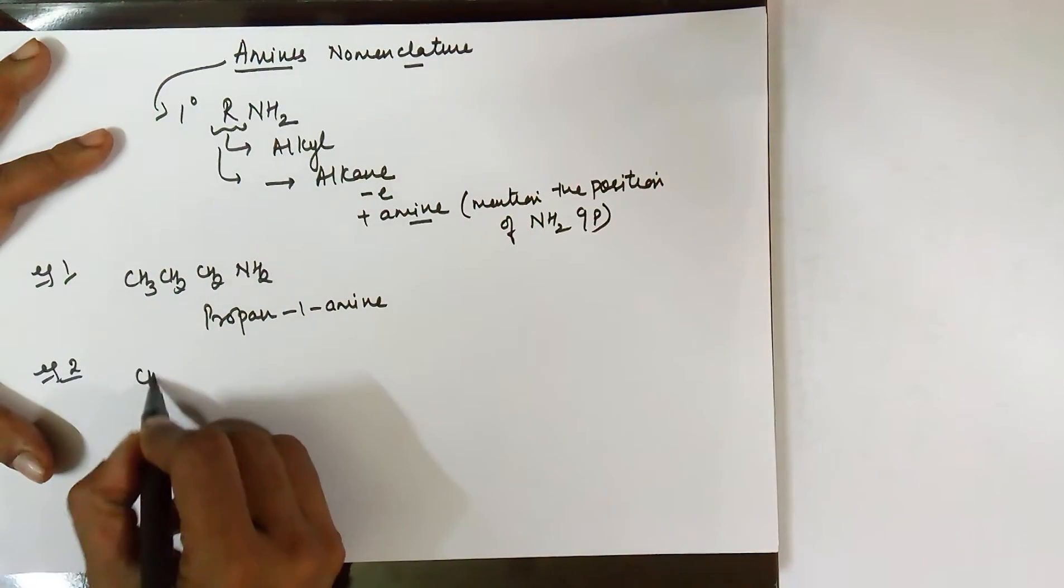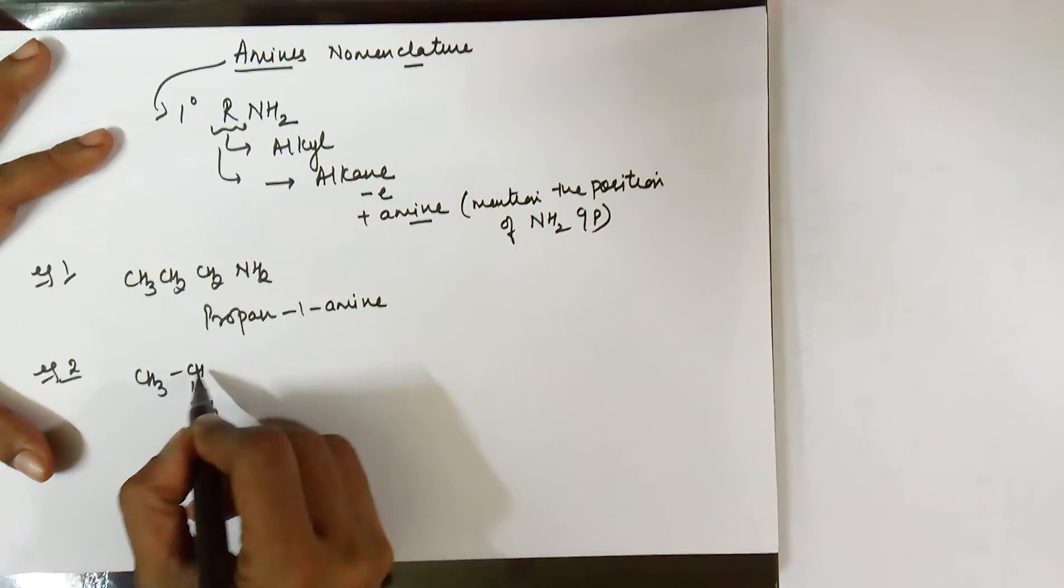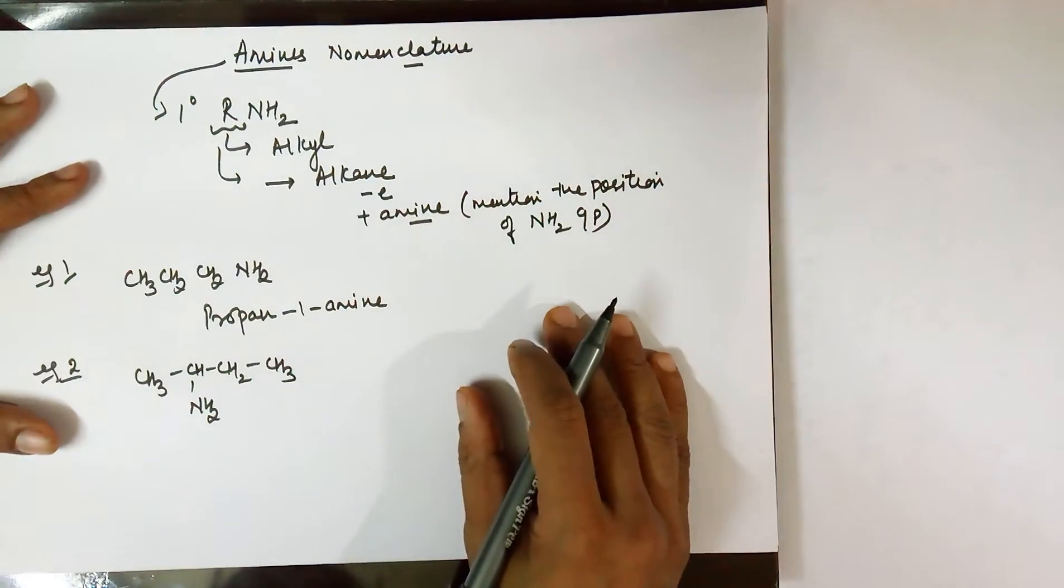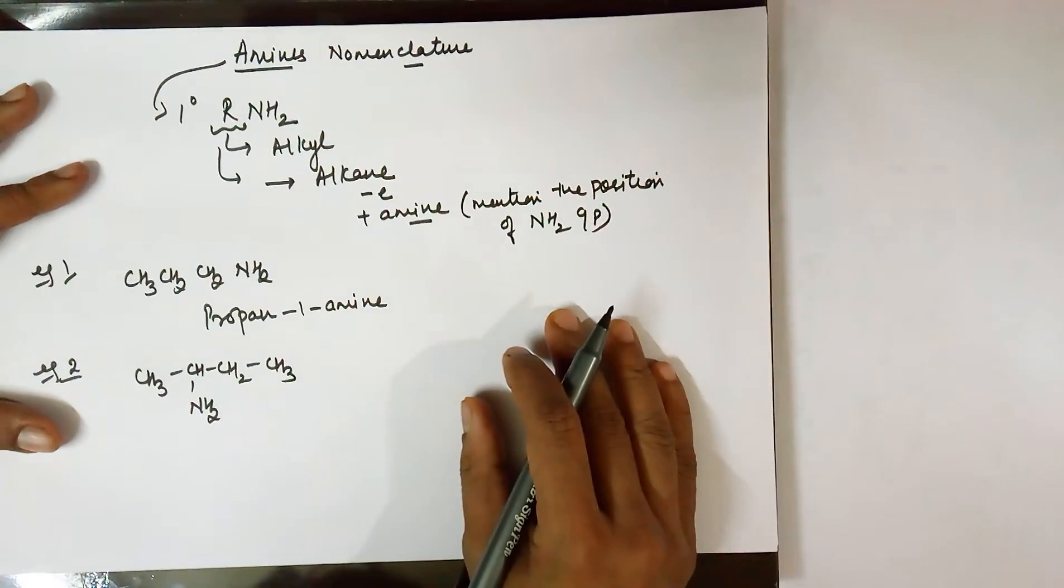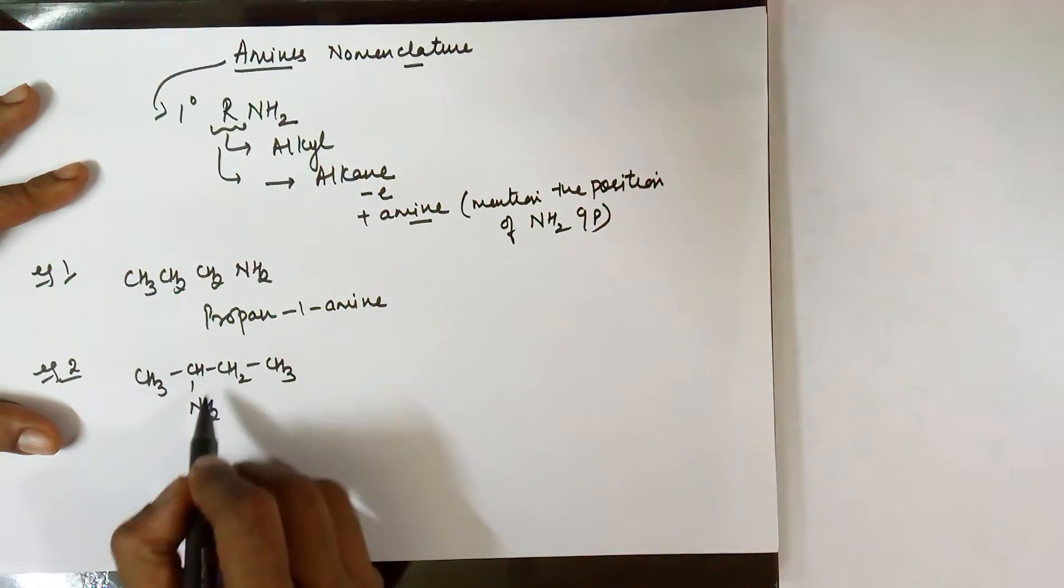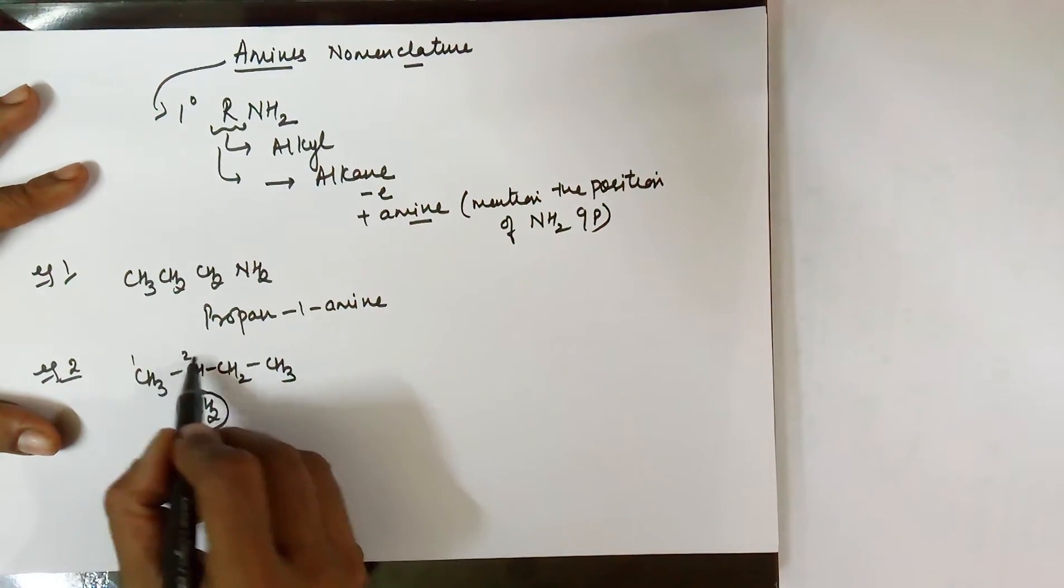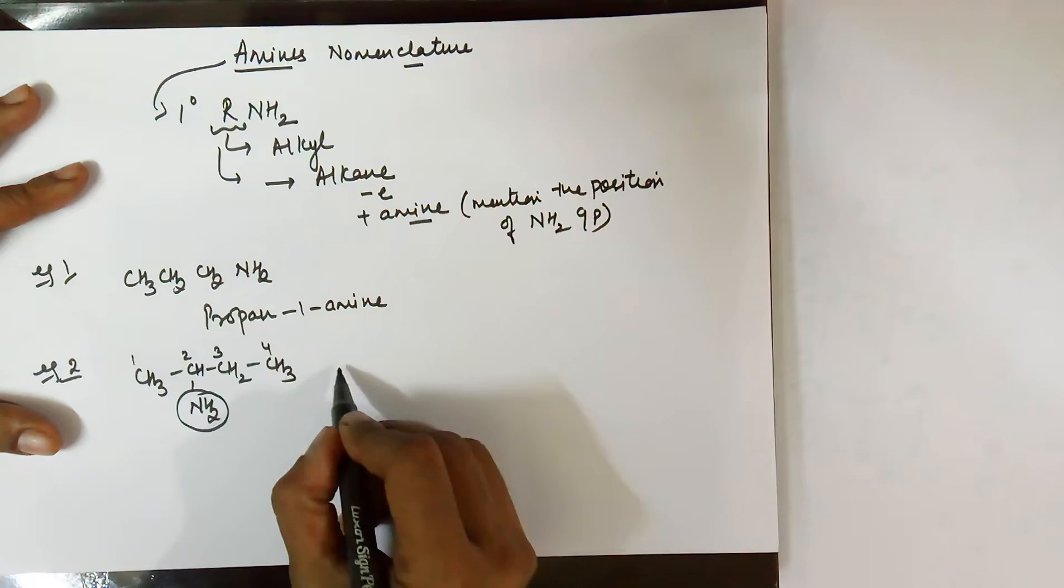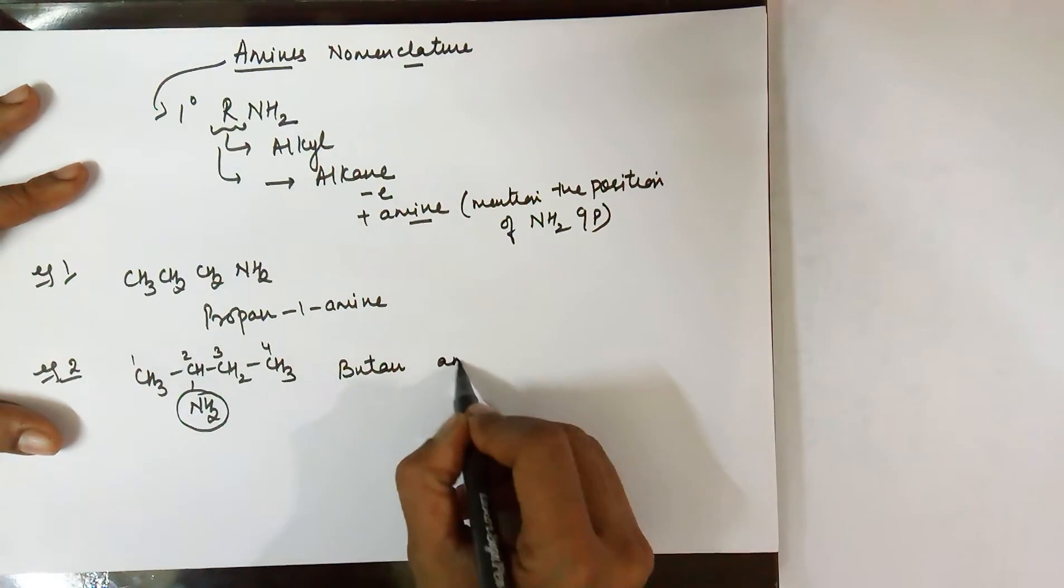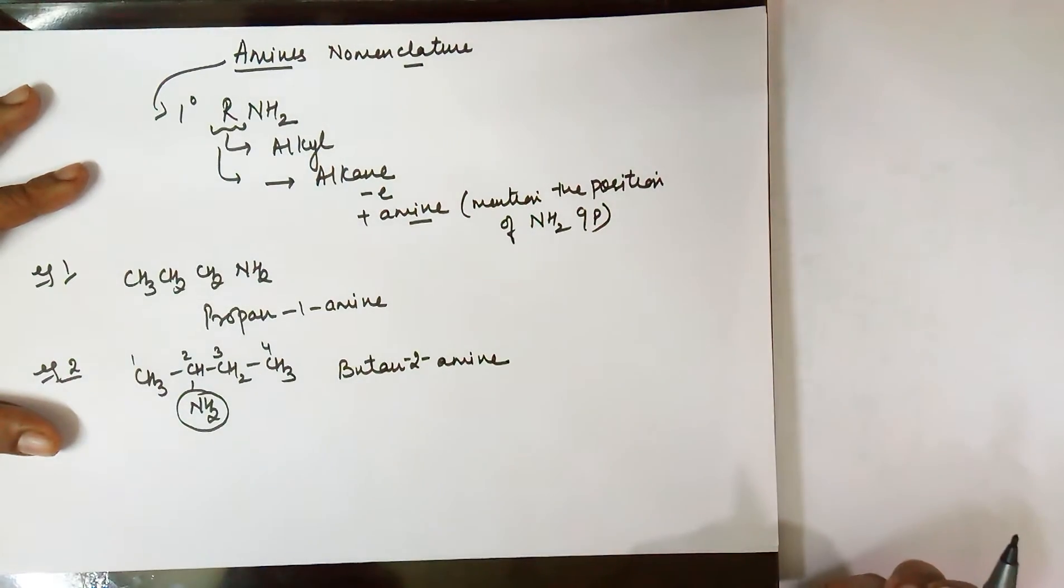Example number 2: In this case, count the number of carbons - there are 4. Numbering the carbon this time would be from the left-hand side so that the NH2 group comes earlier. Hence, the name should be butane. Remove the 'e', you need to add 'amine', and this time it is at the second position, so butan-2-amine.